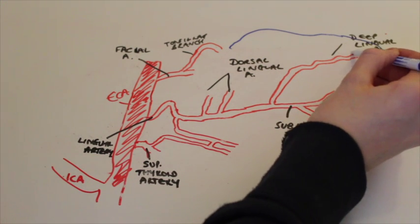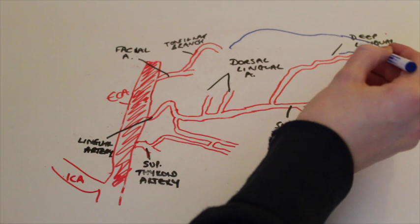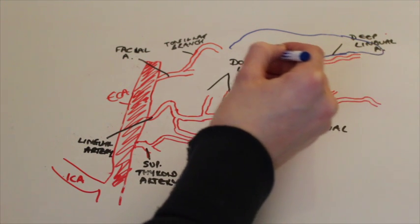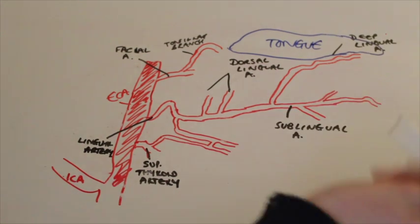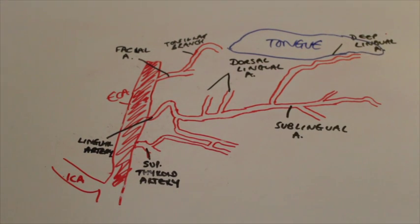So I'm now going to draw on the tongue just to give you more of an idea about where the branches of the lingual artery actually go so you can picture it in your head. So that's the tongue there and the deep lingual artery which goes up to supply the apex.